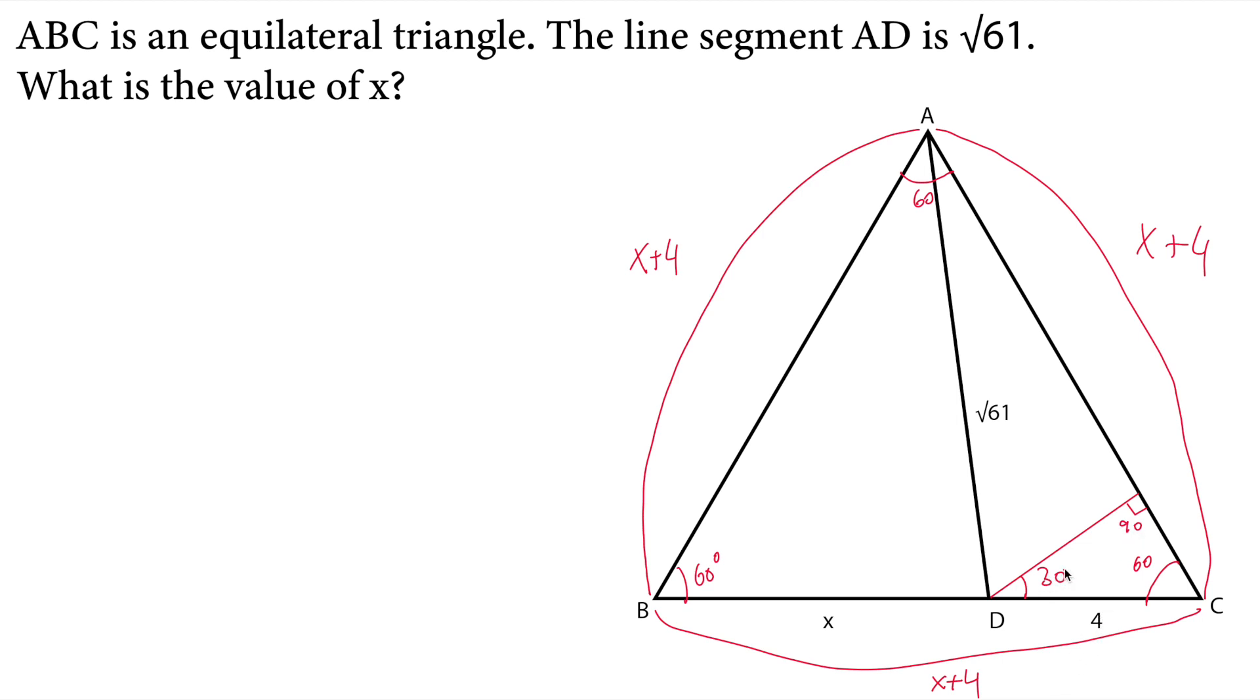It says that the side length across 30 degrees is half of the side length across 90 degrees, which is the hypotenuse. So if the hypotenuse is 4, then the side length across 30 degrees will be 2.